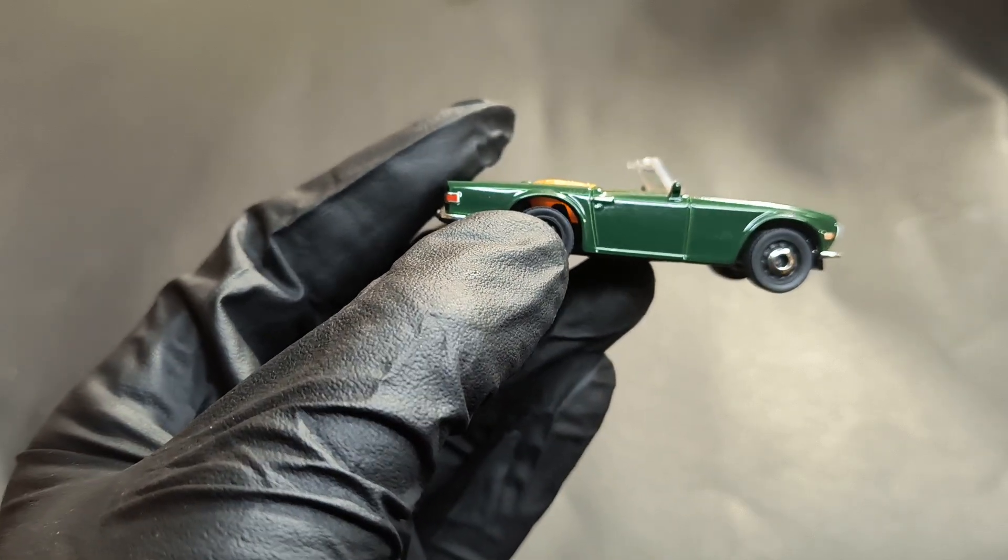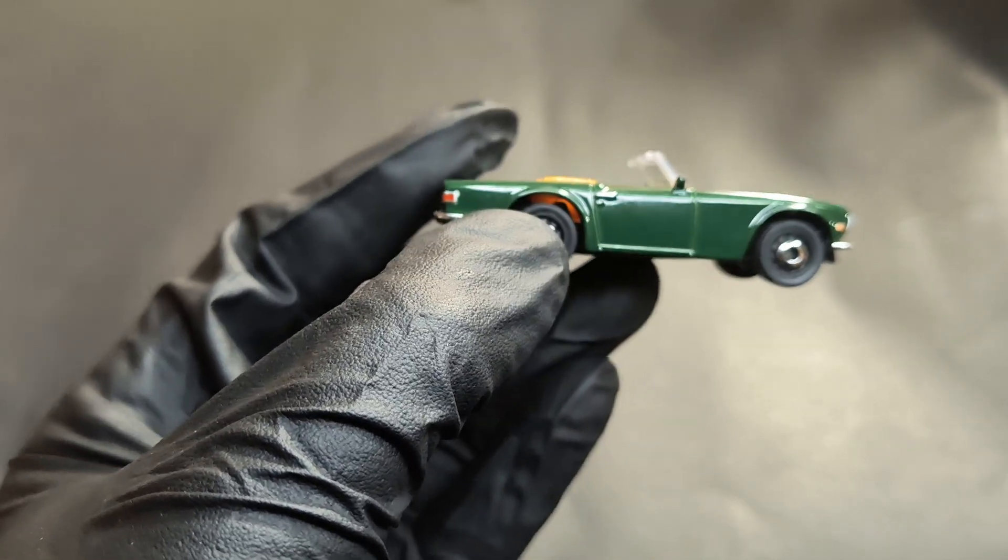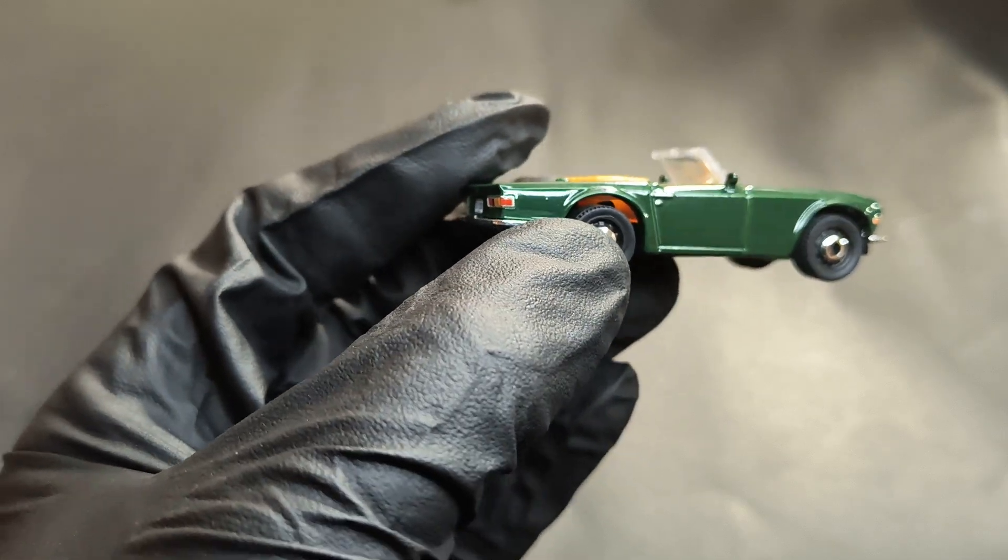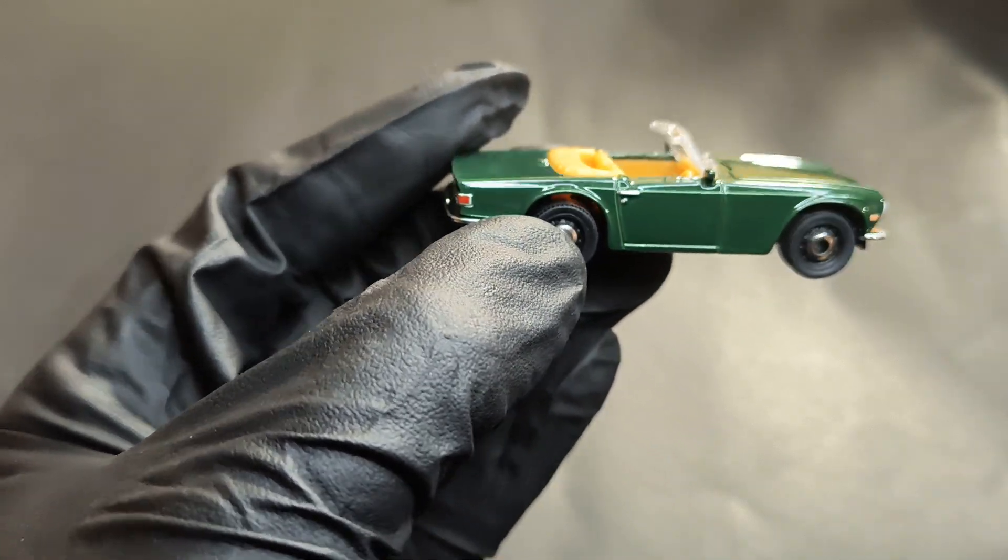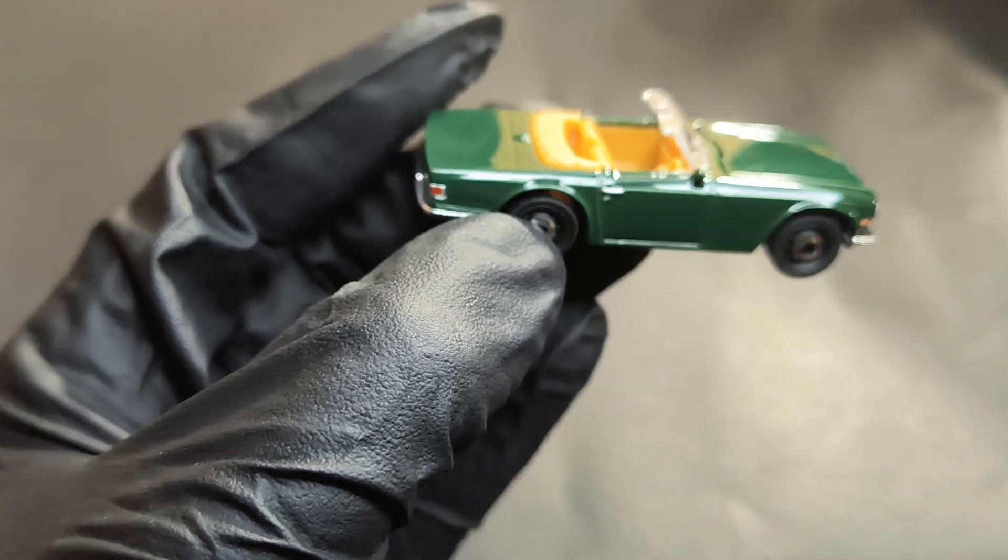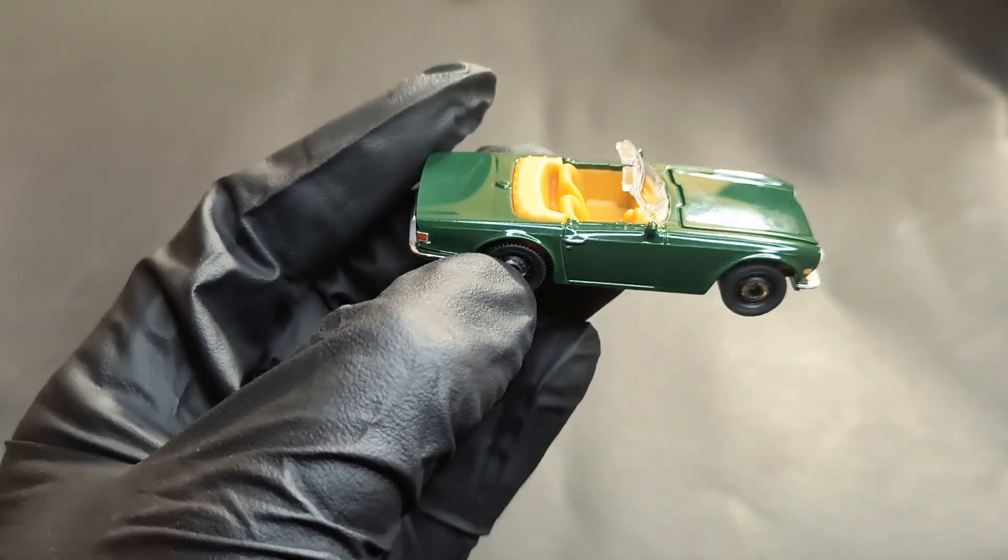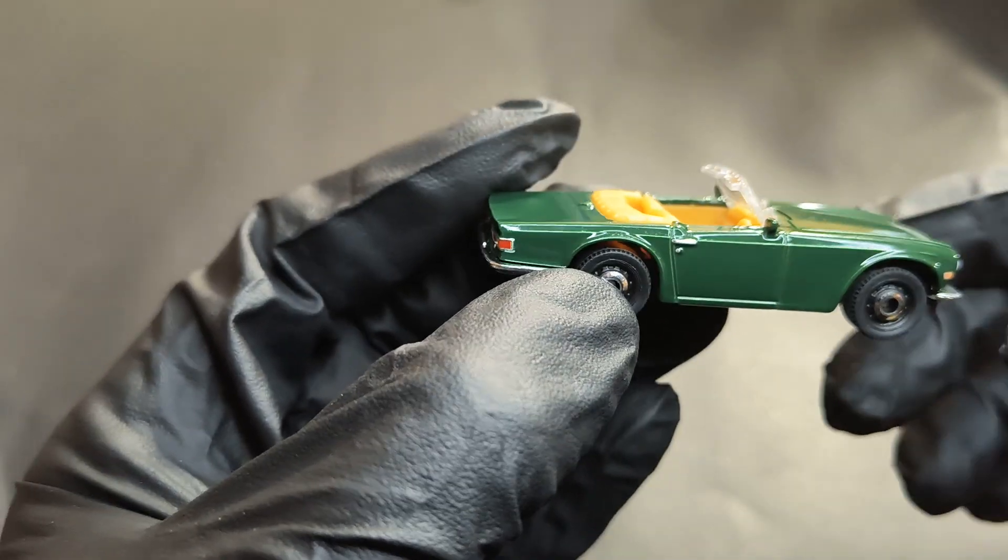Apart from that, you've got the door handle, and you can see the nice body line flowing all the way. You can see a slight curve in the wheel arches too. It's a nice casting, really nice casting.